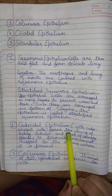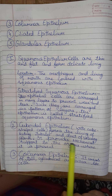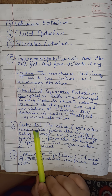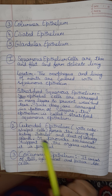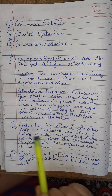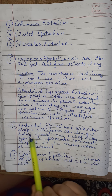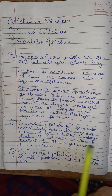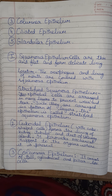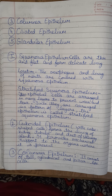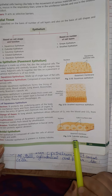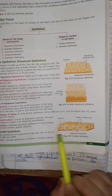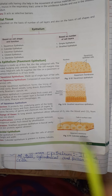Next is cuboidal epithelium. It has cube-shaped cells that form the lining of kidney tubules and ducts of salivary glands. It provides mechanical support to the organs where it is present. You can see in this diagram that the cells are cube-shaped; the surface view shows the cells with a nucleus and a basement membrane.